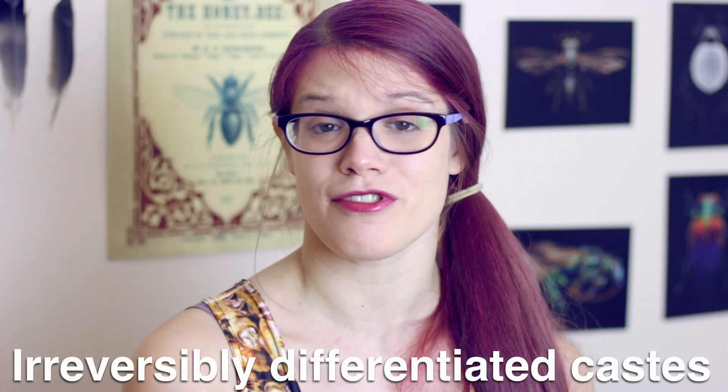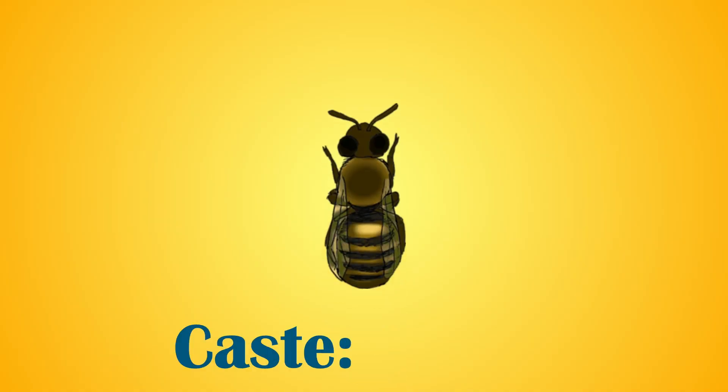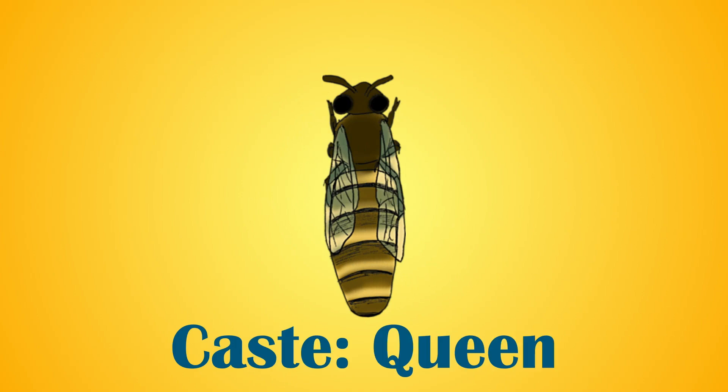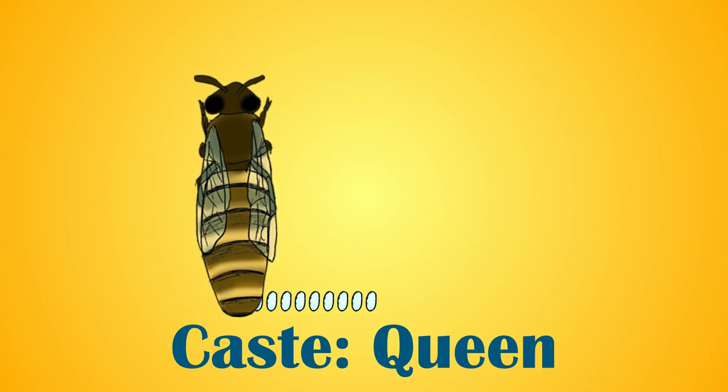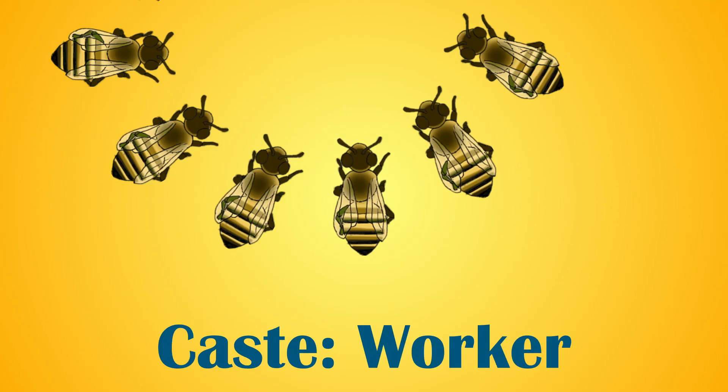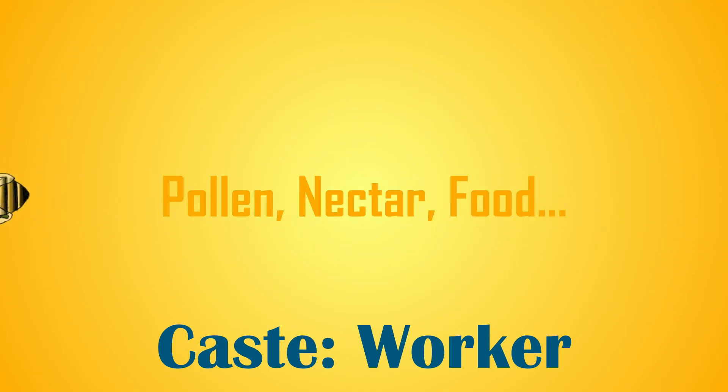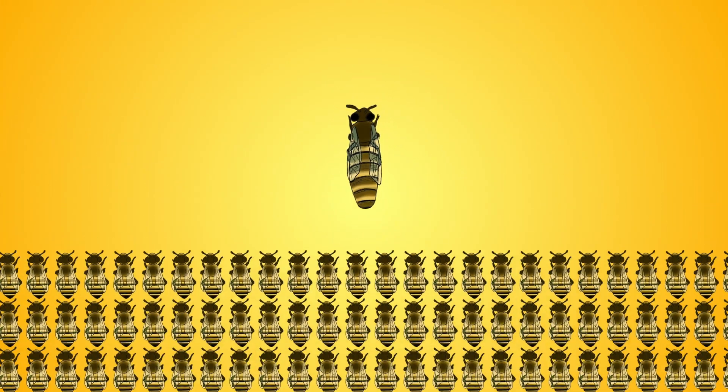A superorganism is a colony of individuals with irreversibly differentiated castes, and a prime example of that would be the honeybee hive. Honeybee colonies have three differentiated castes: the drones, whose sole purpose is to mate with the queen; the queen, who stores the drone's sperm for the rest of her life and uses it to fertilise her eggs; and the workers, who don't reproduce and whose sole duty is to maintain the nest and feed the queen and the brood. Within a superorganism, there is a distinct and irreversible separation between reproductive individuals and those who are sterile, and the superorganism lives and reproduces as if it were an entire organism in itself.